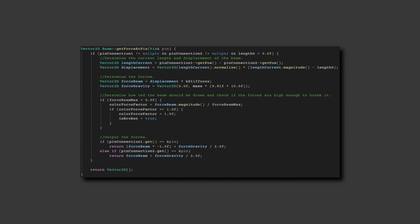If the force is high enough, then the beam's isbroken flag is set to true. Finally, the sum of the force in the beam, and half the force of gravity, is output.